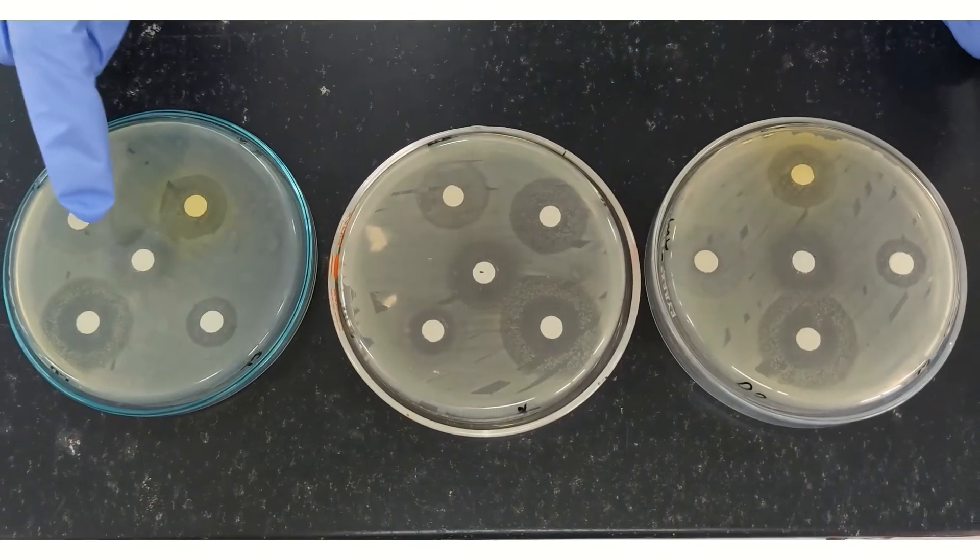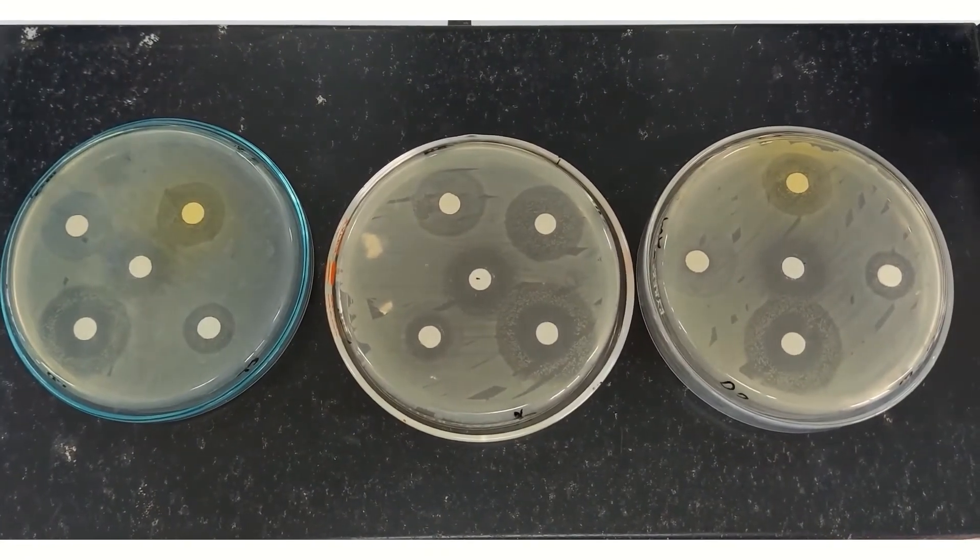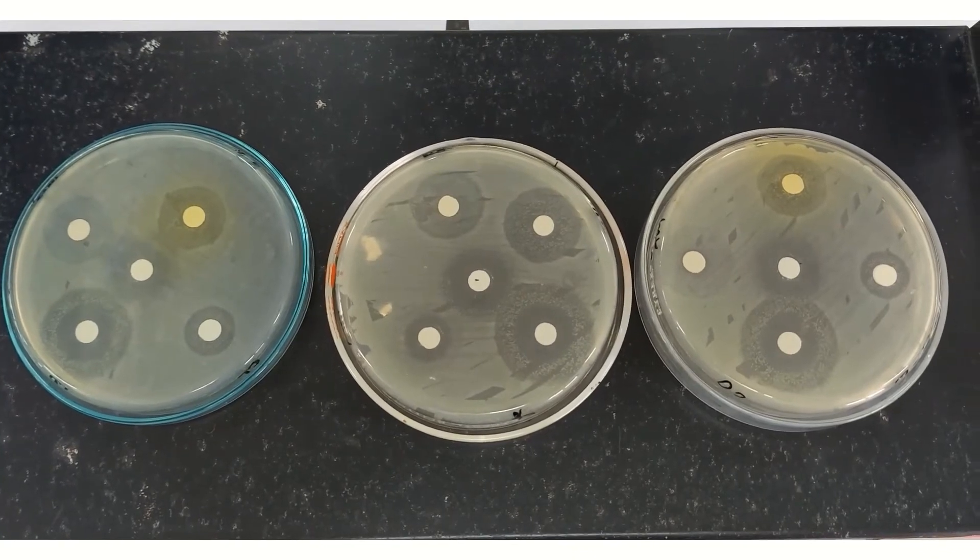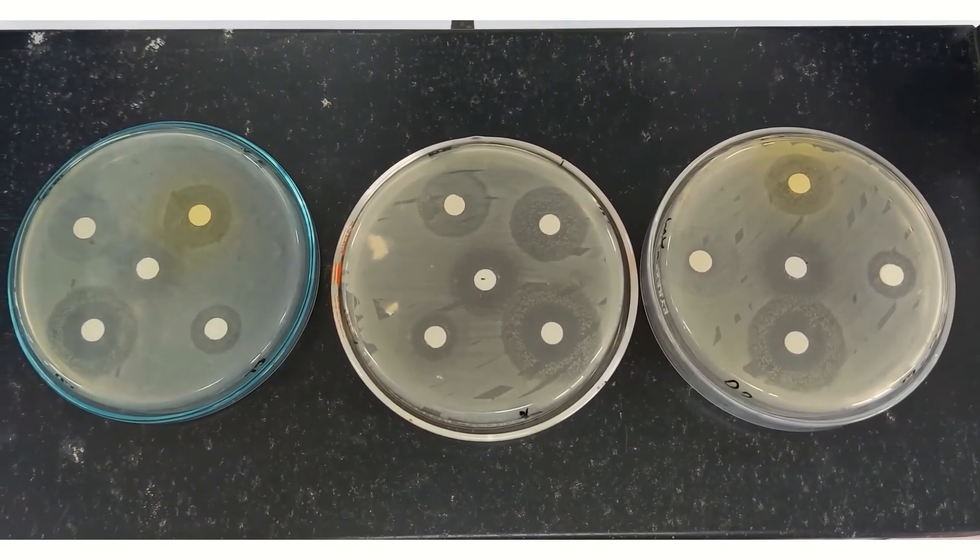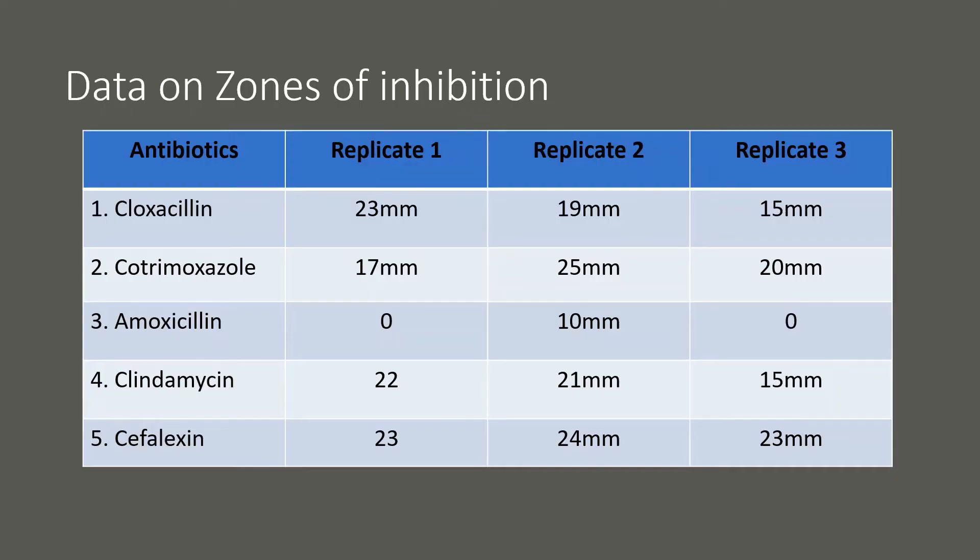Now we are going to measure all the zones of inhibition in our petri dish 1, 2, and 3. This one here is our replicate 1, this one is our replicate 2, and replicate 3, so we will have data that we can conduct statistical analysis. Let's see which antibiotic would give the highest zone of inhibition and which antibiotics would show the lowest zone of inhibition. Here is the complete data set of the zones of inhibition exerted by the antibiotics that we tested: cloxacillin, cotrimoxazole, amoxicillin, clindamycin, and cefalexin. We have data for replicate 1, replicate 2, and replicate 3, enough to conduct statistical analysis so we can know to which antibiotics our bacteria is susceptible to and to which antibiotics it is resistant to.